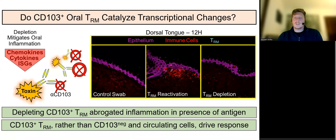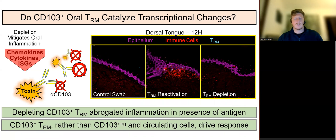Collectively, our study introduces new methodologies for generating, studying, and in vivo depleting oral TRM, which may have broader implications for subset-specific immune cell depletion in other locations. Furthermore, we highlight the pro-inflammatory functions of oral TRM, which likely subvert oral viral infections, but may also contribute to undesired oral inflammation.